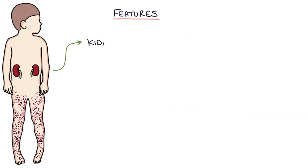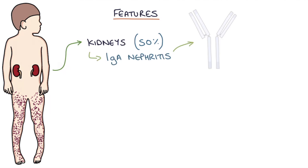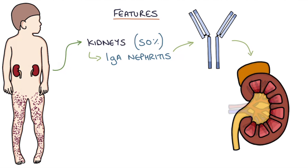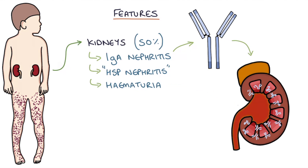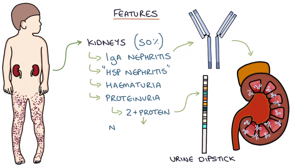HSP affects the kidneys in around 50% of patients, causing an IgA nephritis, sometimes referred to as HSP nephritis. This can lead to microscopic or macroscopic hematuria — invisible or visible blood in the urine — and also proteinuria. If there are more than two pluses of protein on a urine dipstick test, the child has developed nephrotic syndrome and will have some degree of oedema.